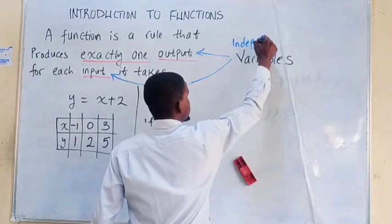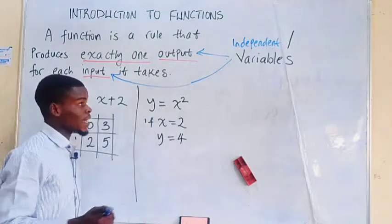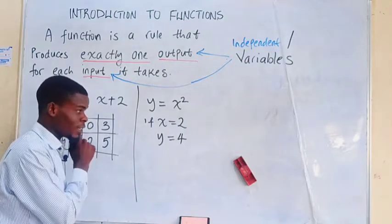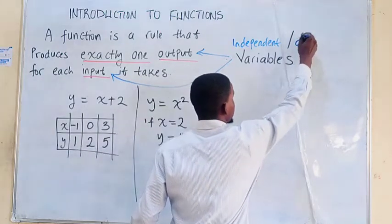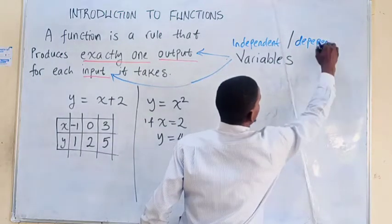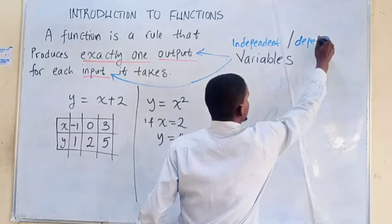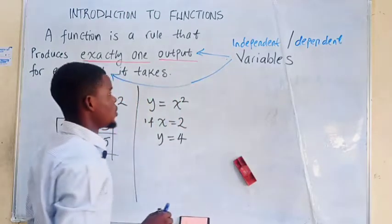So the input there is called the independent variable, while the output could be noted as dependent variable. As I said earlier, the values of y depend on what we plug in. So we can call that the dependent variable.